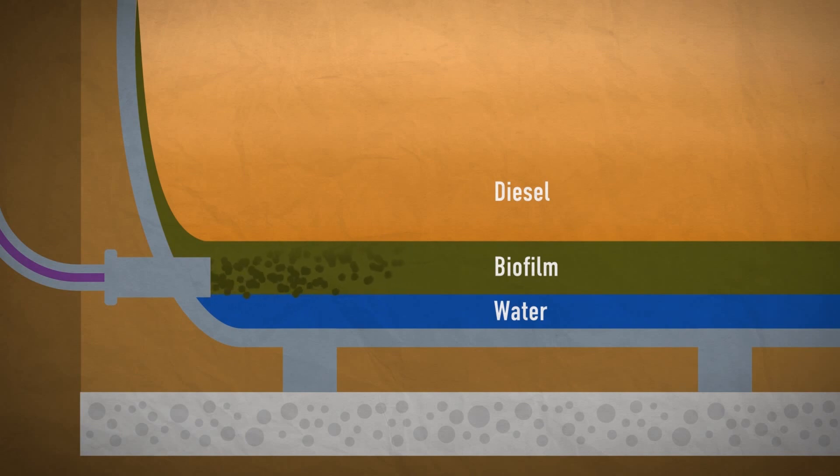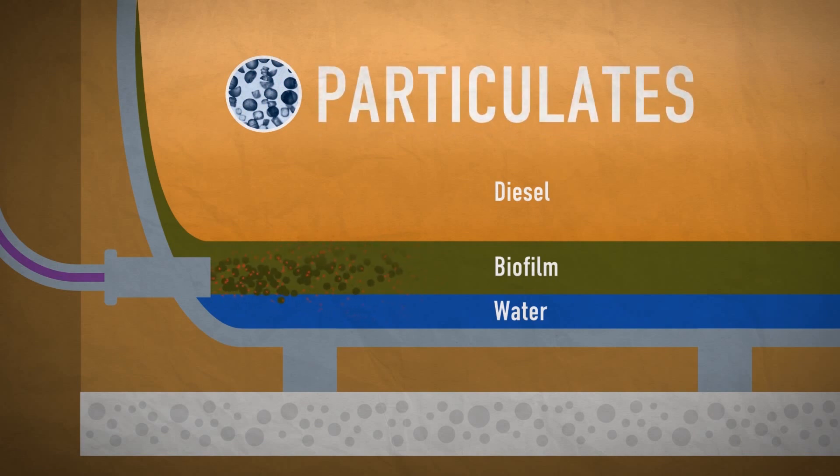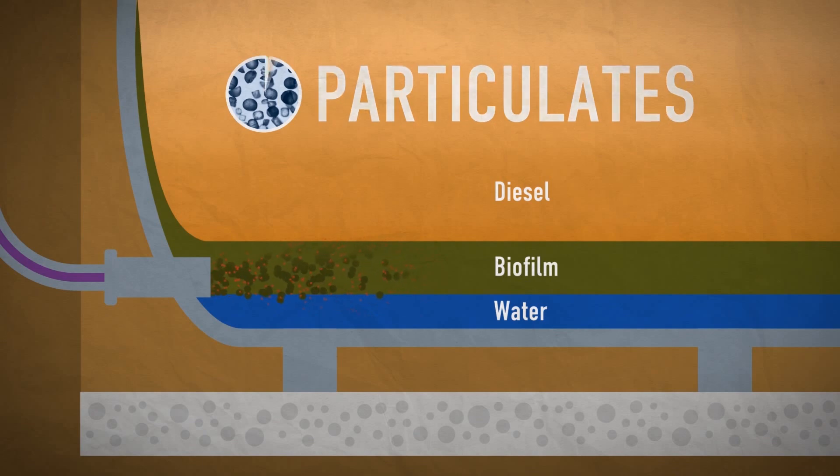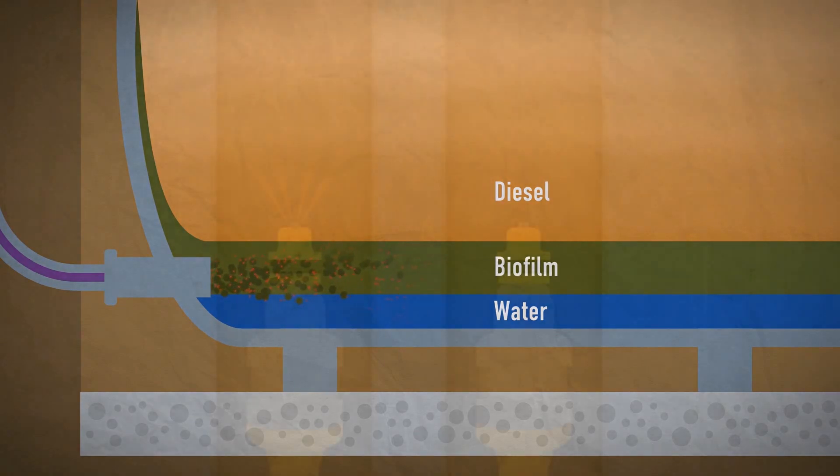Fuel filters and injectors can also become blocked or suffer damage as a result of solid particulates. This type of contamination can appear in many forms, including sand and grit from poorly sealed air vents or rust from deteriorating tank surfaces.